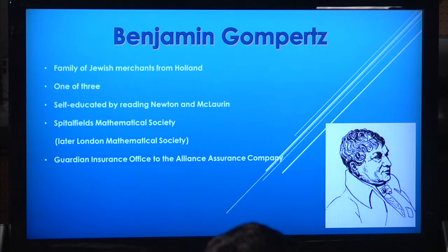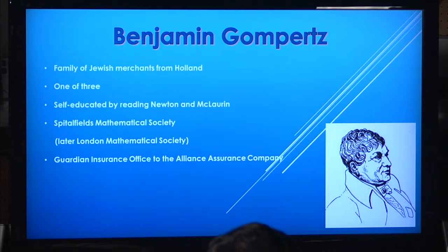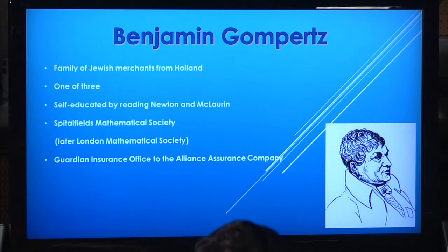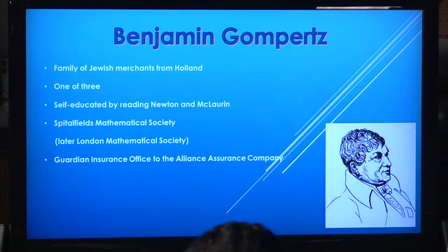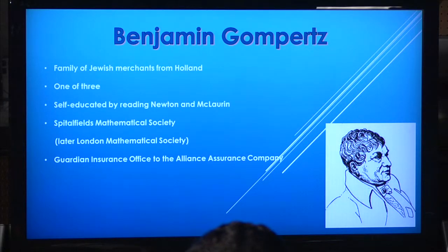This guy right here, his name is Benjamin Gompertz. He was Jewish and came from a family of Jewish merchants from Holland. He's one of three children, and he was self-educated — by reading Newton and McLaurin. His mathematical education took place at the Spitalfields Mathematical Society, today known as the London Mathematical Society. His occupation was an actuary for the Guardian Insurance Office and the Alliance Insurance Company. He's important because he developed a tumor growth model used in orthopedics for tumors in hips, joints, or similar areas.